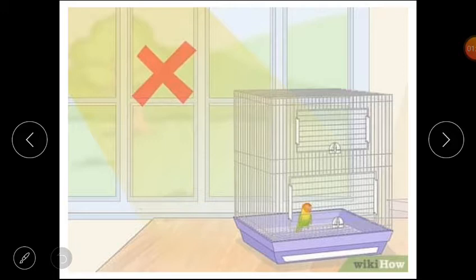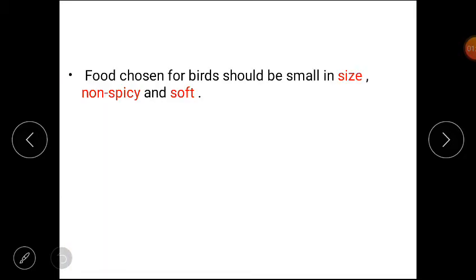We can show our care for these animals by not keeping them in cages. They cannot do things that they like to do in their natural habitat. Food chosen for birds should be small in size, non-spicy, and soft. We should choose the food for birds - small size because birds are small, they cannot pick up big food, so non-spicy and soft.